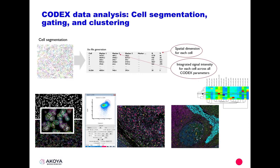The data produced by CODEX come in simple formats. Cells are segmented, producing an FCS file, and we also have TIF images. In the FCS file, we have cytometric data for each segmented cell as well as that cell's XY coordinates — this enables spatial analysis because we have both cytometric data to determine phenotype and spatial location inside tissue. We can identify cell populations using either a flow gating strategy or by performing clustering.